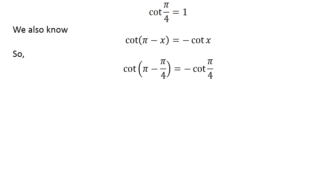So, cotangent of pi minus pi upon 4 is equal to minus cotangent of pi upon 4. As pi minus pi upon 4 is equal to 3 times pi upon 4, cotangent of 3 times pi upon 4 is equal to minus 1.